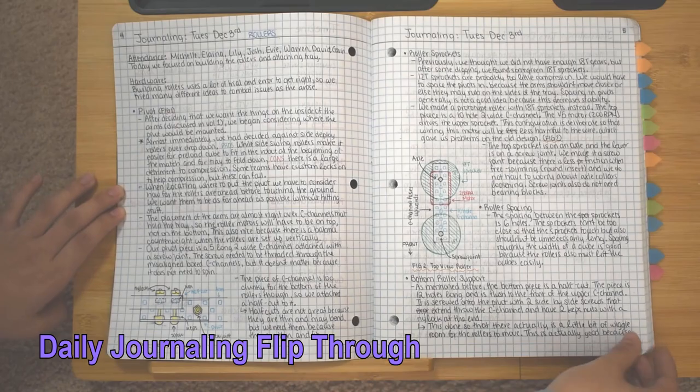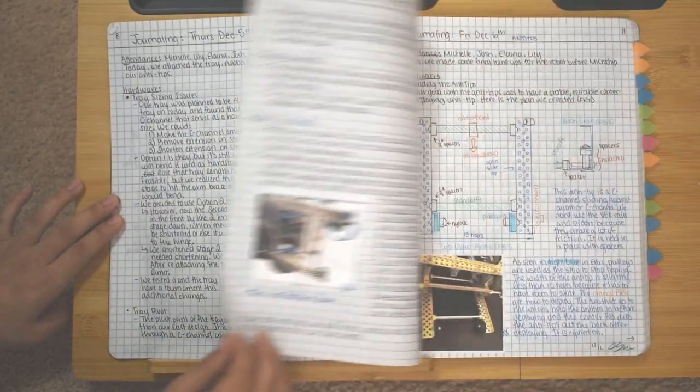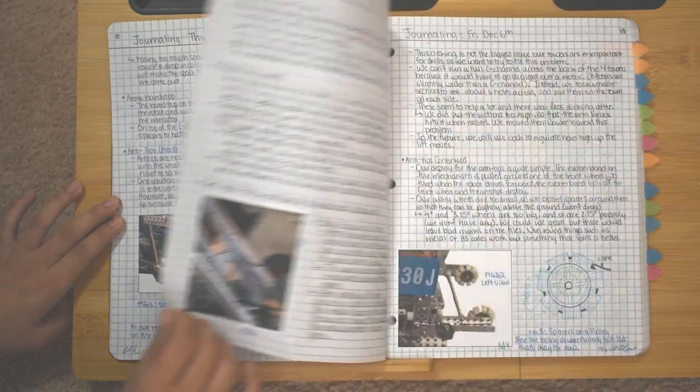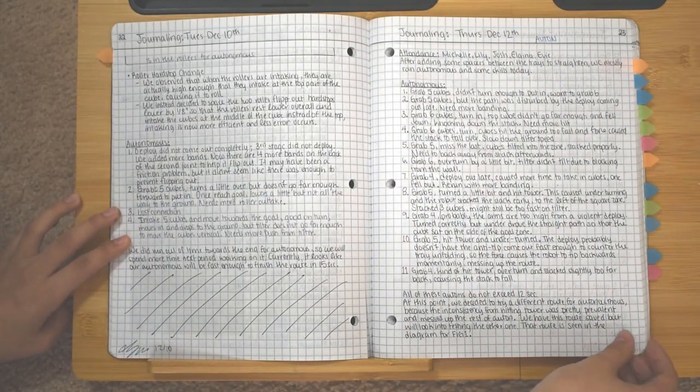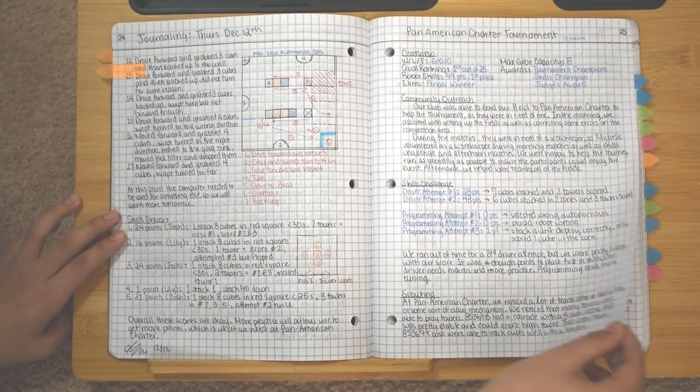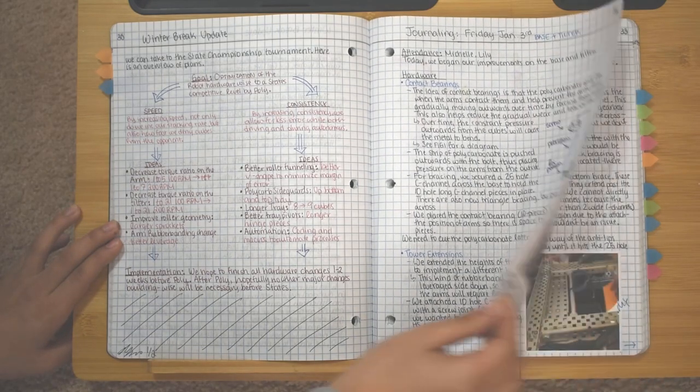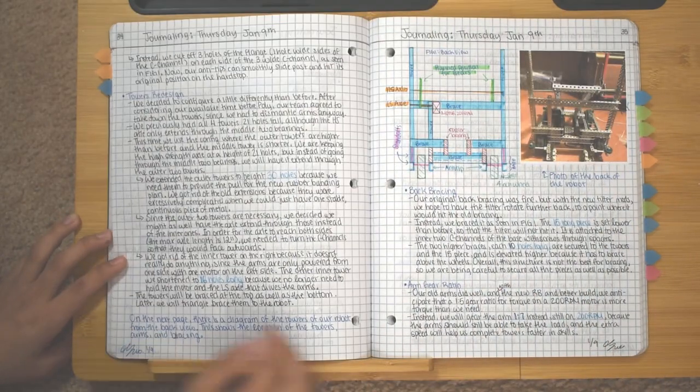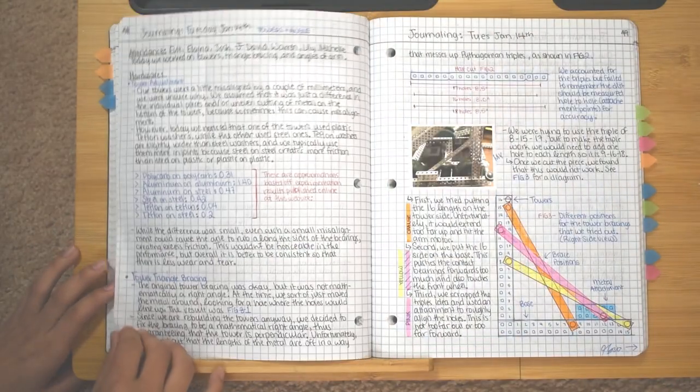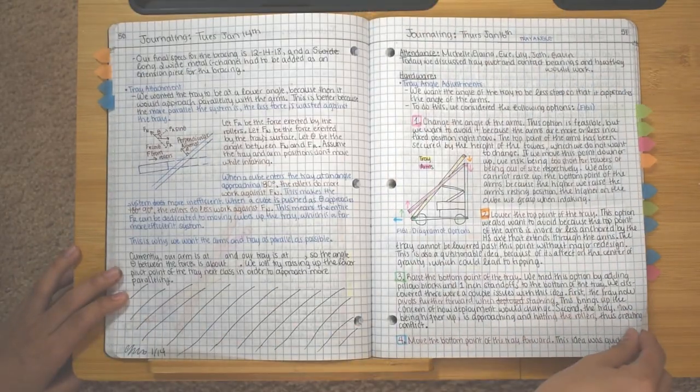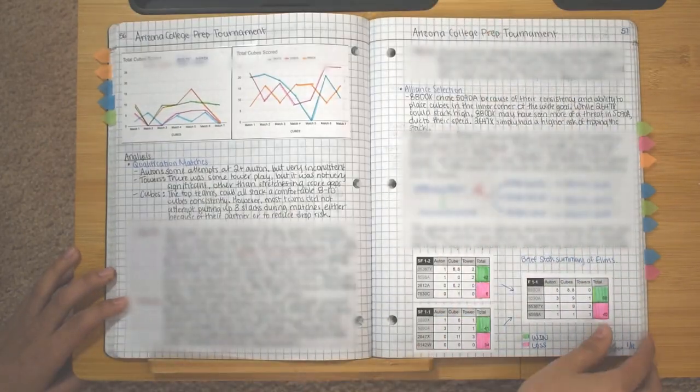Here is our daily journaling flip through. These pages came mostly from the second journal as our journaling skills improved over the course of the year to become a better sample of what the design rubric is looking for. Judges expect this kind of improvement. As you may notice, a lot of these pages were written by one person as seen with the similar handwriting on each one. This is generally a bad practice because judges want to see that everyone on the team was able to contribute. Try your best to have all your team members journal on a regular basis.